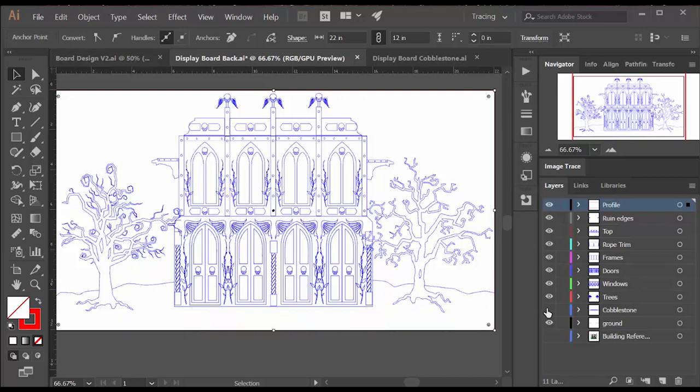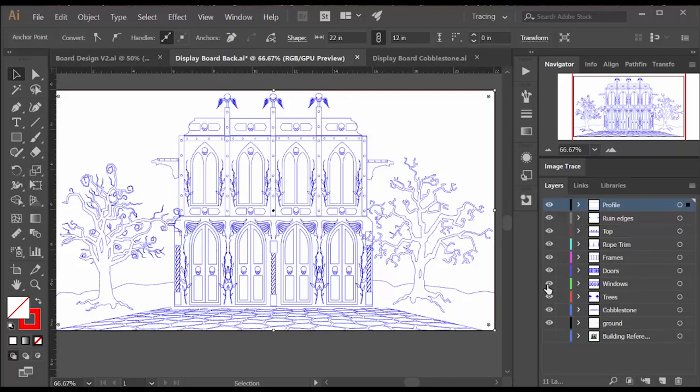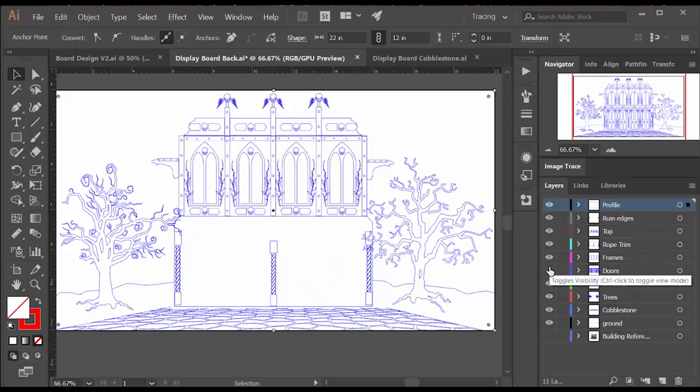Each of the key components are on separate layers. Basically I would create a door or a window and then I would duplicate it into the other slots.